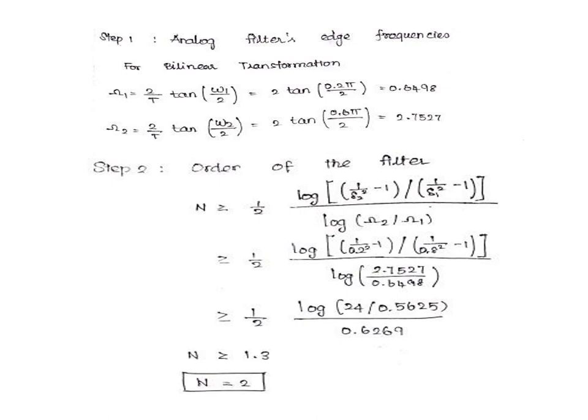Step 1: Analog frequency transformation. We are going to convert the omega value into analog omega. The formula is Ω₁ = (2/T) tan(ω₁/2). Substituting the values we get analog omega Ω₁ = 0.6498. And Ω₂, the formula is (2/T) tan(ω₂/2). Converting omega into analog omega, the value is 2.7527.